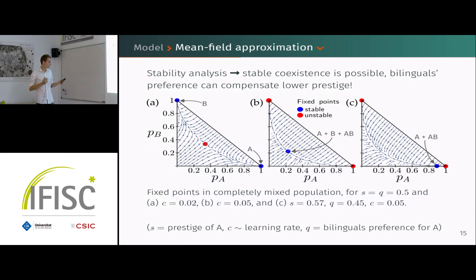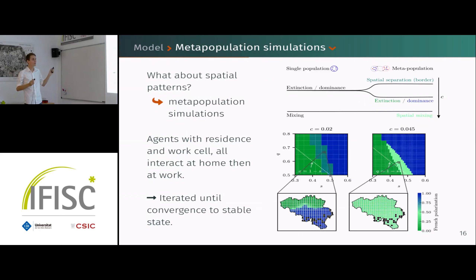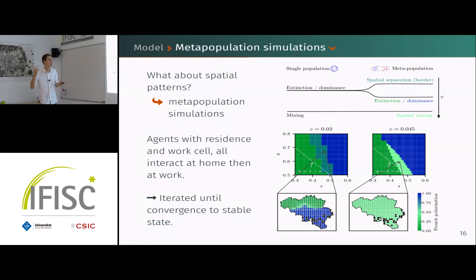That was a remarkable result from the model. But this was just for a single population — we have extinction, dominance, or complete mixing. Since we started from a spatial observation, we also simulate the model in space, using a meta-population framework.